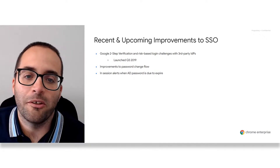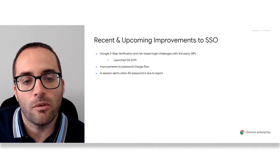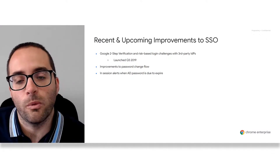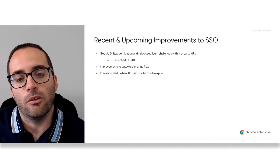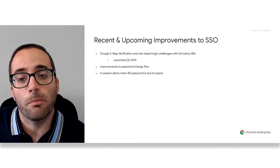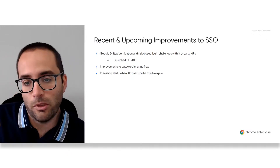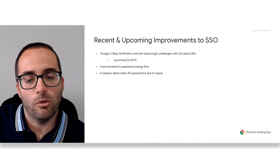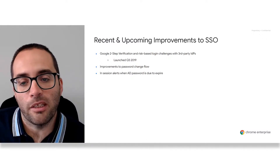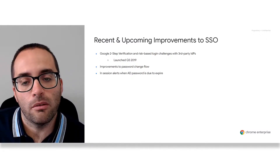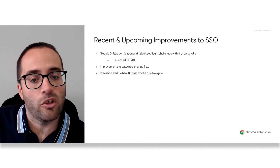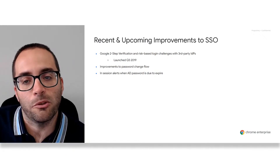Just to touch on some recent updates and upcoming improvements: in Q3 2019, we added the ability to use Google's two-step verification and risk-based login challenges with a third-party IDP. This means you can authenticate your users using your existing IDP and then prompt them to use a one-time passcode. There's no integration required between your existing IDP and Google — you just set up both services and the two-step verification will be presented to the user once they've passed your IDP authentication. Throughout 2020, we're working on improvements to the password change flow and in-session alerts when the Active Directory password is due to expire.